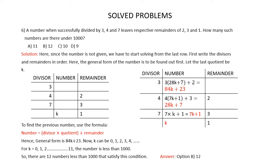Hence the general form is 84K + 23. The value of K can be 0, 1, 2, 3, 4, 5, 6 and so on. But only if the value of K is between 0 and 11 is the number less than 1000. If K = 12, the number exceeds 1000. So for K = 0, 1, 2, … up to 11, the number will be less than 1000. From 0 to 11 there are 12 values. So there are 12 numbers less than 1000 that satisfy this condition. The correct answer is option B, 12.